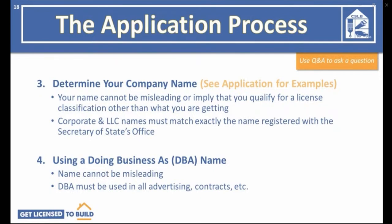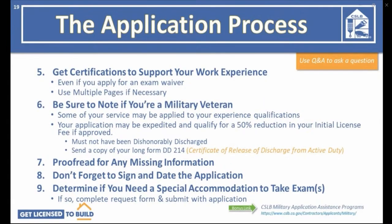Next, determine your company name. Your name cannot be misleading or imply a classification other than what you're getting. Corporate and LLC names must match exactly the name registered with the California Secretary of State's office. You can also use a DBA (Doing Business As) name — it cannot be misleading and must be used in all advertising and on all contracts. Be sure to note if you're a military veteran, as some military service may count toward your four years of experience, and your application may be expedited with a possible 50% reduction in your initial licensing fee through CSLB's Military Application Assistance Program.